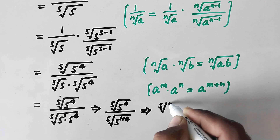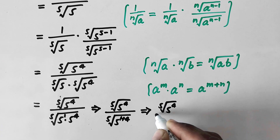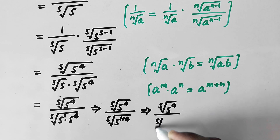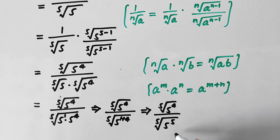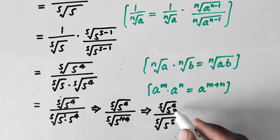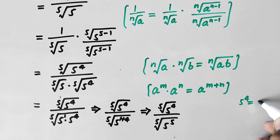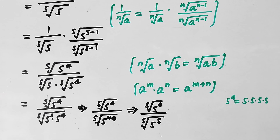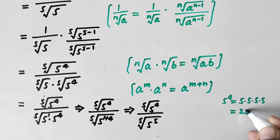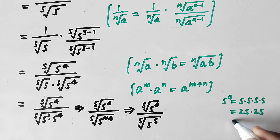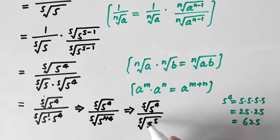We can expand 5^4: it equals 5 × 5 × 5 × 5. Computing this, 5 × 5 = 25, and 25 × 25 = 625. So the numerator is the fifth root of 625.